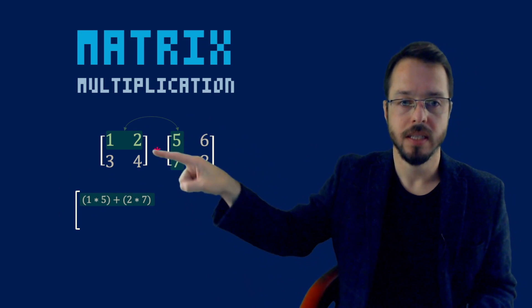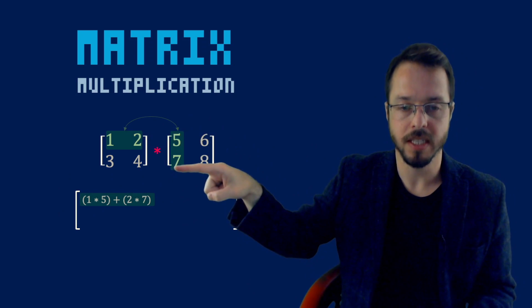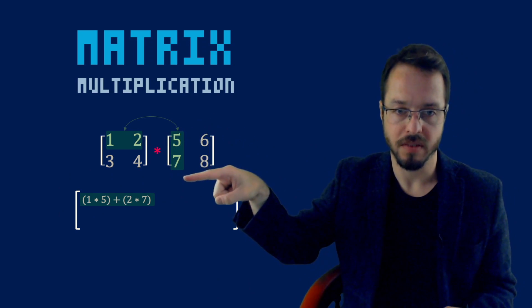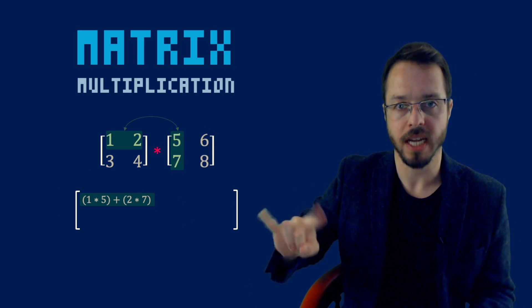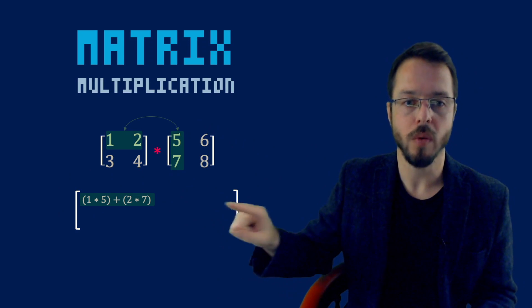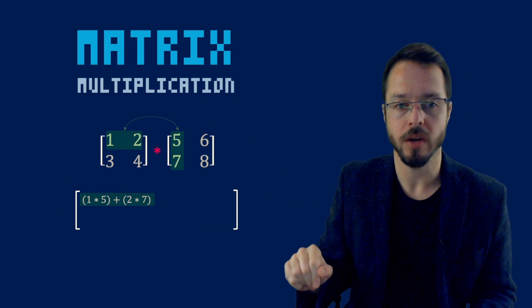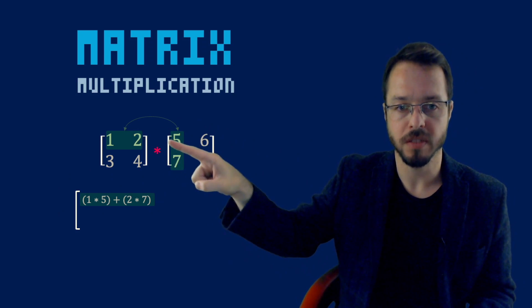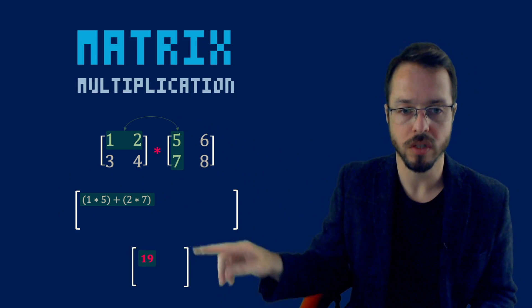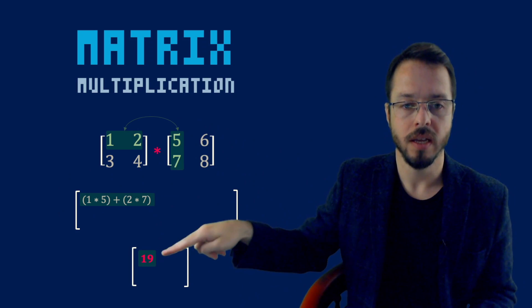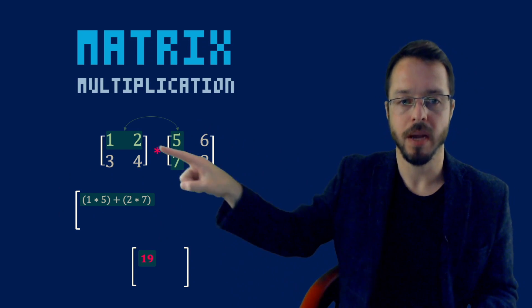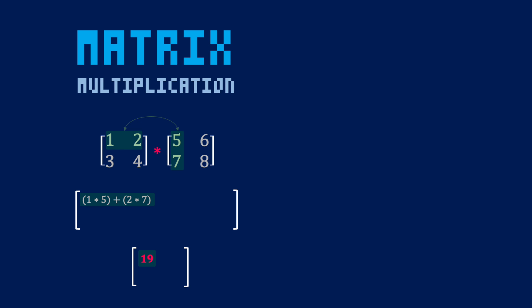The operation is: first times the first plus the second times the second. So it is always row times column. One times five plus two times seven. You basically multiply the first with the first, plus the second with the second, and then the third with the third if you have it — always row times column, adding everything together. One times five plus two times seven gives us 19. So 19 is the resulting entry of the first row, first column.